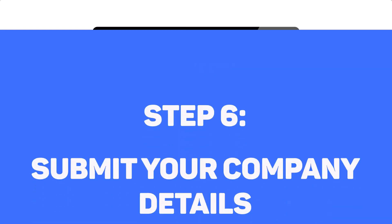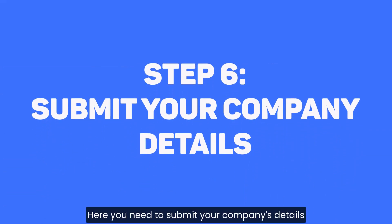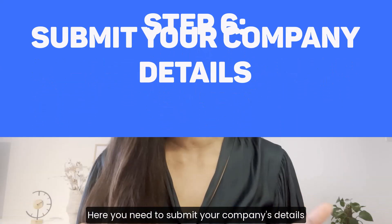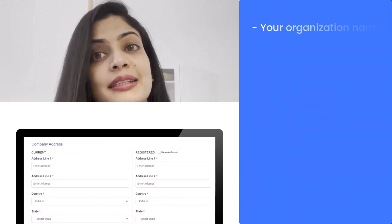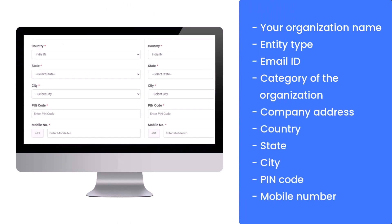Step 6: Submit your company details. Here you need to submit your company's details. Enter your organization name, entity type, email ID, category of the organization, company address, company state, city, pin code and mobile number.